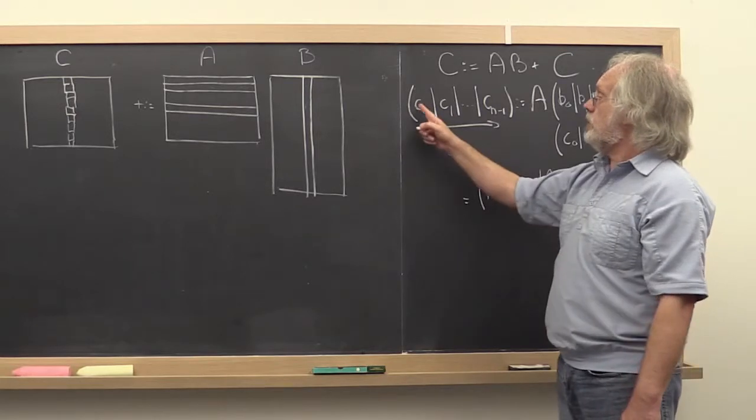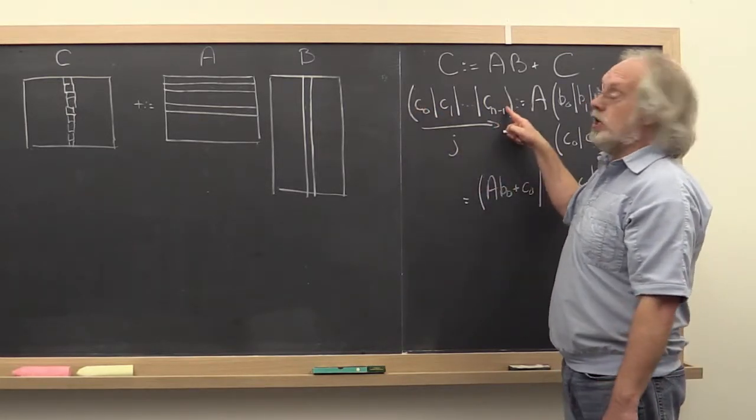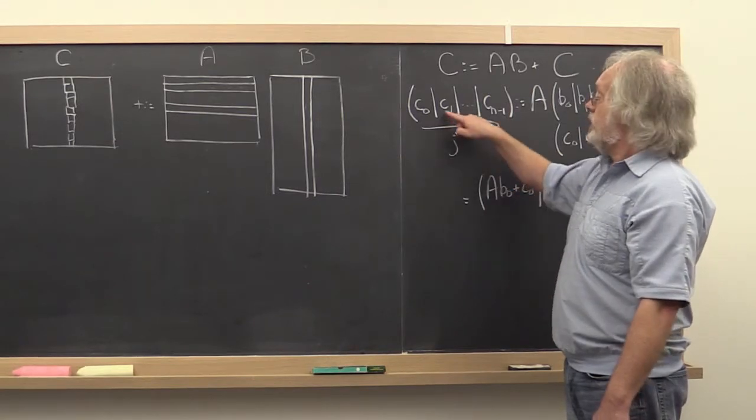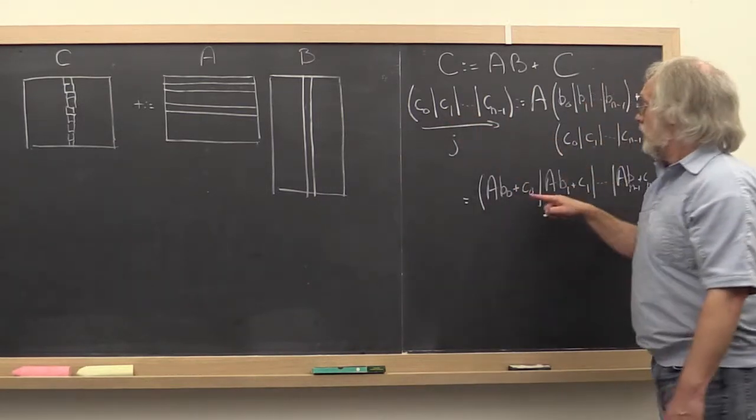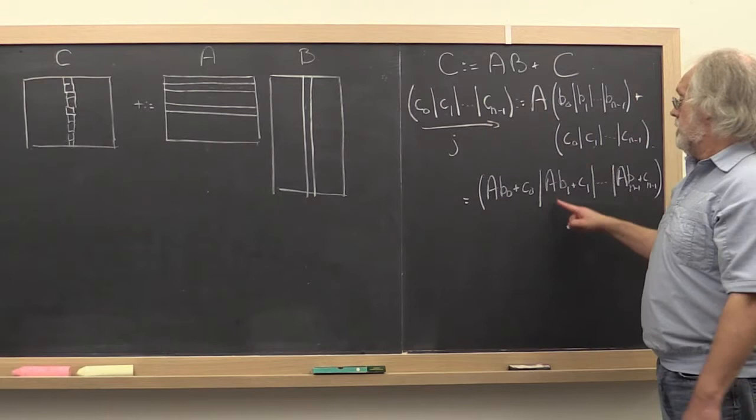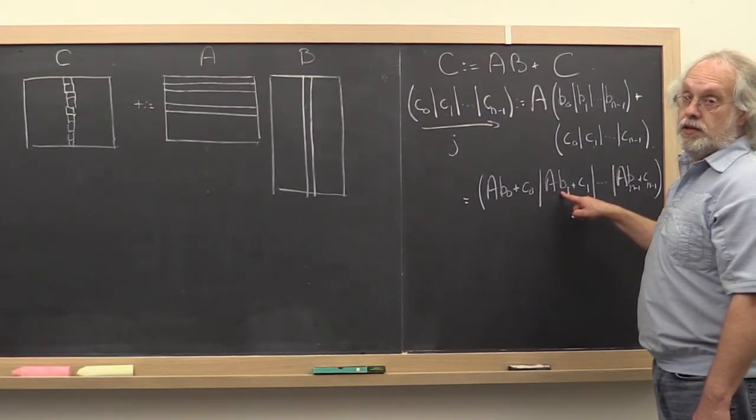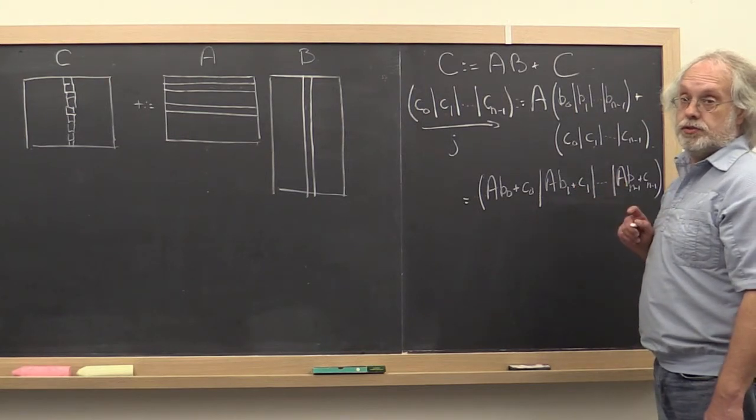In other words, we can think of this as looping over the columns of C using index J. And for each column of C, we update that column by doing a matrix vector multiply with the corresponding column of B, adding the result to C.